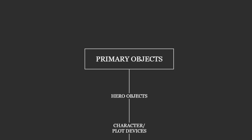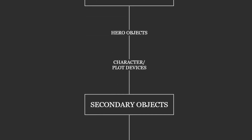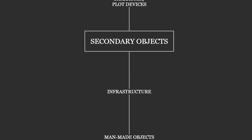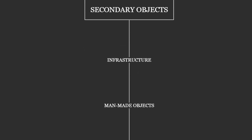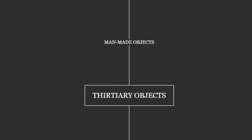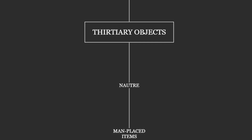When creating environments, I find it best to split the world into three categories. Primary objects include characters and hero items that take centre focus. Secondary items can include objects such as infrastructure, or items that tell the story of your world. Tertiary items include small details such as fauna, or man-placed objects that tell small stories within the scene. For this process, I will be silent and let you see how I build scenes using this type of logic.